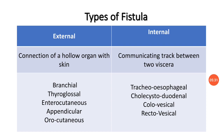The second type is internal fistula — a communicating tract between two viscera. Examples include tracheoesophageal fistula between the trachea and oesophagus (a congenital type), cholecystoduodenal fistula, colovesical fistula between the colon and urinary bladder, and rectovesical fistula between the rectum and urinary bladder.